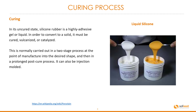Curing. In its uncured state, silicone rubber is a highly adhesive gel or liquid. In order to convert it to a solid, it must be cured, vulcanized, or catalyzed. This is normally carried out in a two-stage process at the point of manufacture into a desired shape, and then in a prolonged post-cure process. It can also be injection molded.